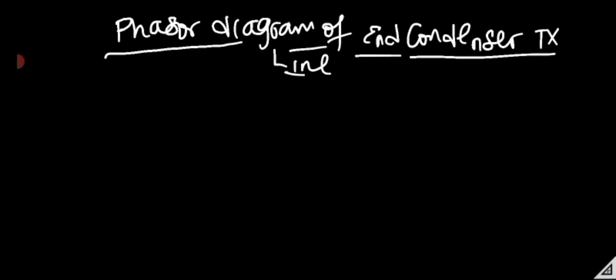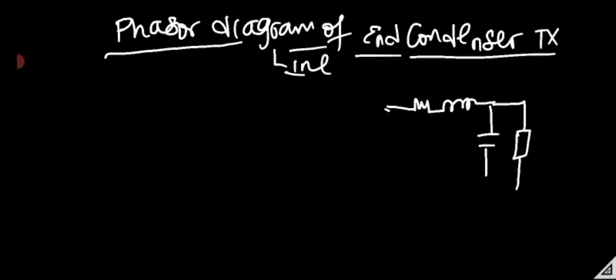The end condenser is a representation where the capacitor is at the end of the transmission line — 'condenser' also means capacitor. So if we sketch the transmission line, we have the resistors and inductors, then the capacitance of the line at the end. The sending voltage is VX, the sending current is IX, and the current flowing through the capacitance is IC.